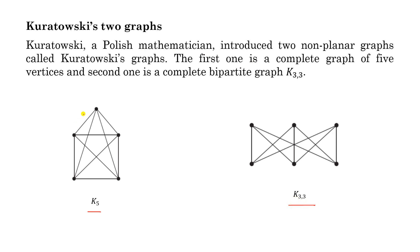So let us check whether K5 is planar or not. We try to find a geometrical representation without intersection of edges — let us try to draw all these edges without intersections. Is it possible or not?